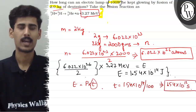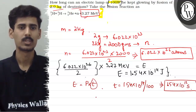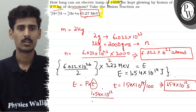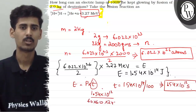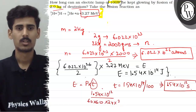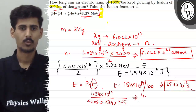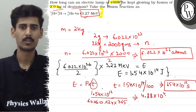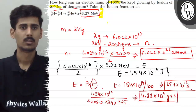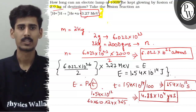So for this many seconds our lamp can be kept glowing. And if we convert this to years, this will be 1.54 into 10 raise to the power 12 divided by 60 into 60 into 24 into 365. So this becomes 4.88 into 10 raise to the power 4 years. So for this many years our lamp can burn with this 2 kg of deuterium. This will be the answer for this question. I hope that you understand this question well and best of luck.